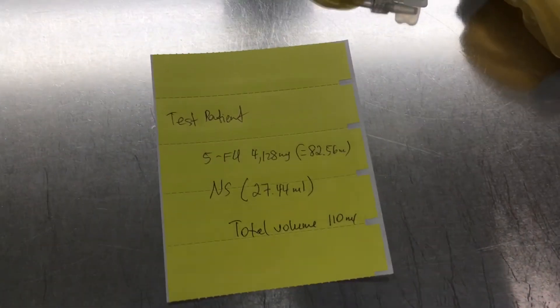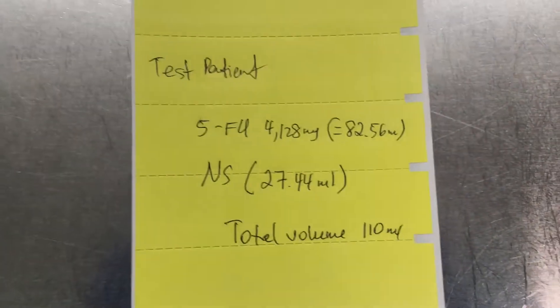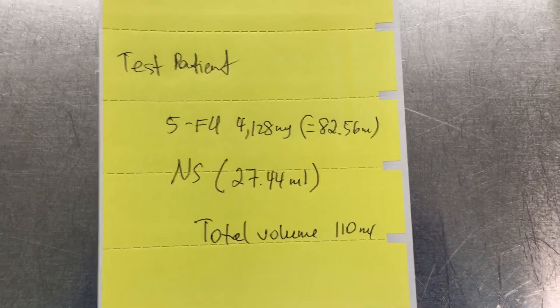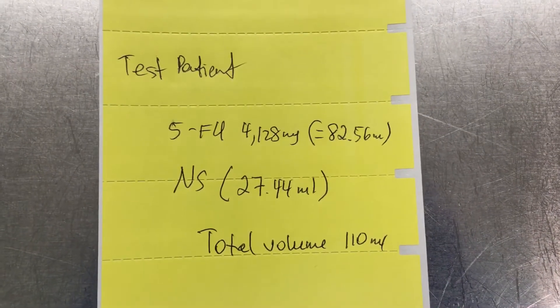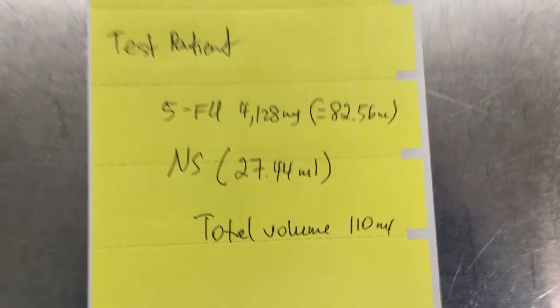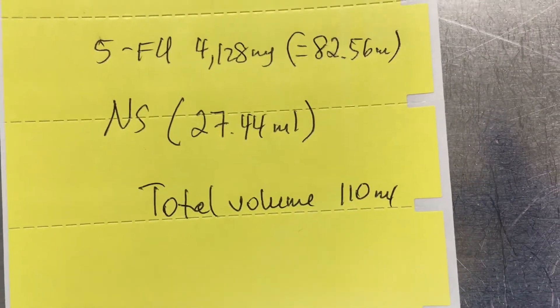In this video, we're going to demonstrate how to prime and load an elastomeric pump. This is the test patient label that shows you the volume of 5FU, the volume of NS, and the total volume, which is 110 ml.